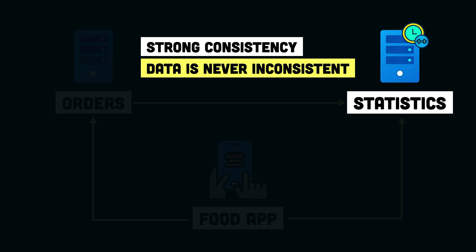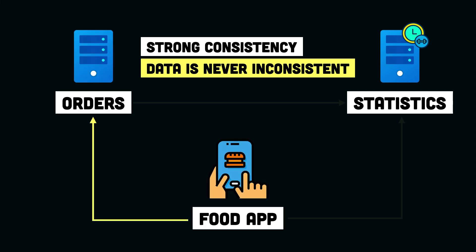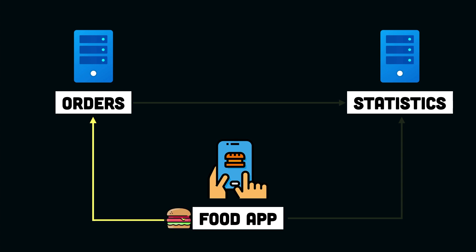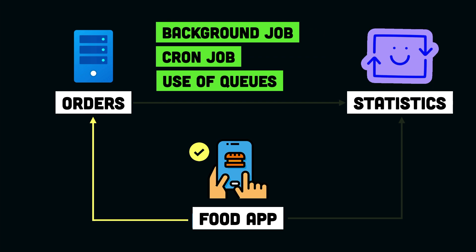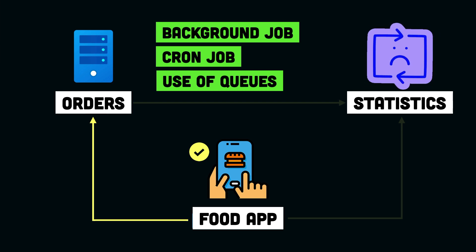To tackle this issue, we go with a different approach to achieve consistency. We modify the order service so that whenever a user places an order, it is not going to wait for the stats service to update the order count — it is just going to return an okay response to the user and create the order. This fixes the performance issue and orders are created much faster. But this means our data is going to be inconsistent, because we are never updating the order count in the stats service. To fix that, we implement a background job such as a cron job, or we use queues that continuously check for new orders and keep updating the order count in the stats service to make sure the order count matches the actual number of orders received.